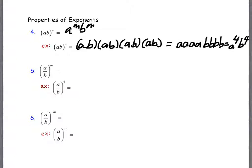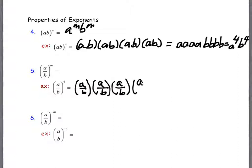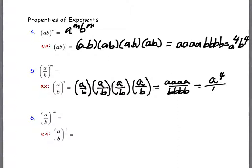Number five is even clearer because I don't have to regroup. I've got (a/b) four times. From earlier in this section we know we multiply straight across the top, so this is having four a's on top and four b's on bottom — a^4 on top and b^4 on bottom.